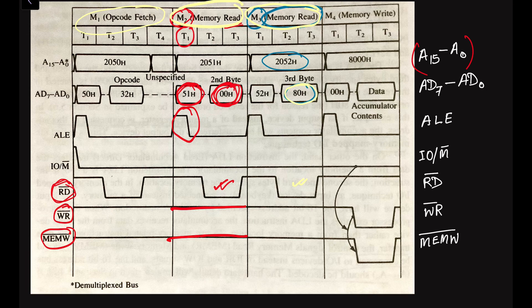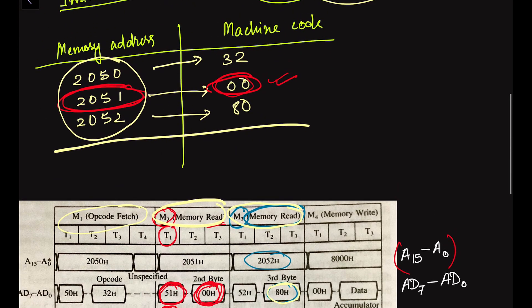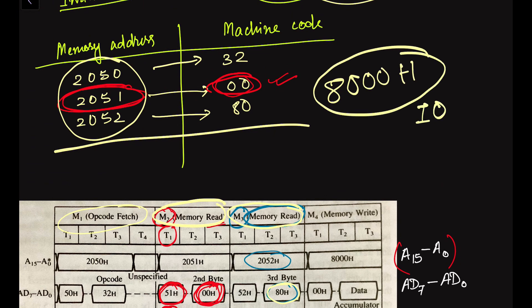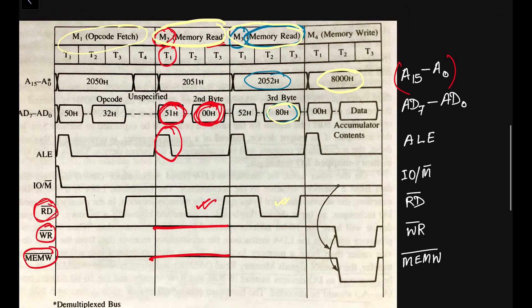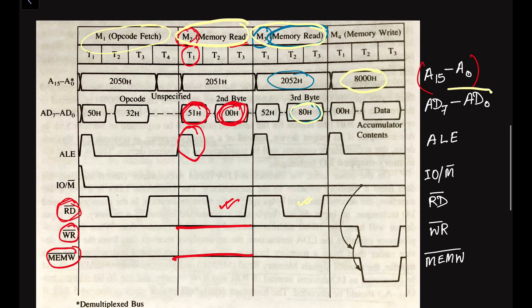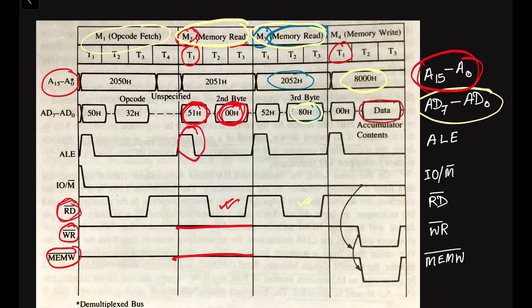Now we come to the main discussion — the memory mapped input output write. We now have the address 8000H, which is the address of the input output device. In this fourth machine cycle M4 we have to write the content of the accumulator to that I/O device address. The data is transferred through the address-data multiplex bus. During T1 the ALE signal is high, and the entire 16-bit address 8000H is placed on A15 to A0, with the lower order address on the multiplexed bus.